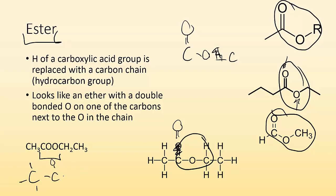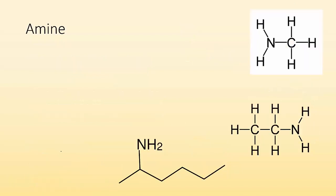In the condensed structural formula for esters, you might see CH3C, then an O, then another O, then CH2 and CH3. There must be a double bond O there, and that pattern — C double bond O, O, carbon chain — tells you that's an ester.